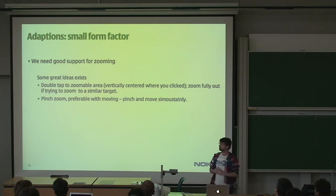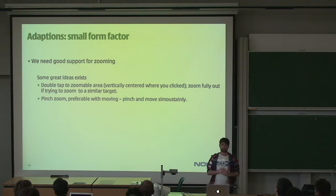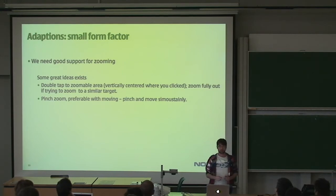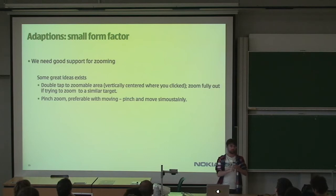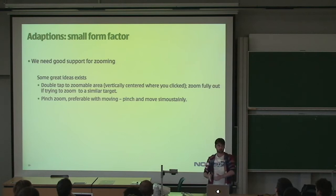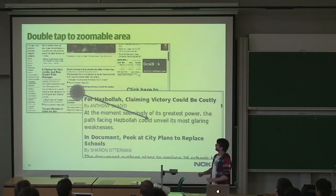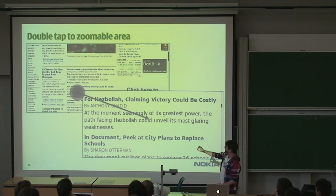So let's look at the small form factor. There are some really great ideas on how to deal with it. The first is zooming — it needs to be possible to zoom out or zoom in to look at what's interesting for you. One good idea is double-tap on a specific area of the page. For instance, if you have different columns on a news page like the New York Times, double-tap on one area and it will zoom in. There's a map in the zoom center so you can read it.